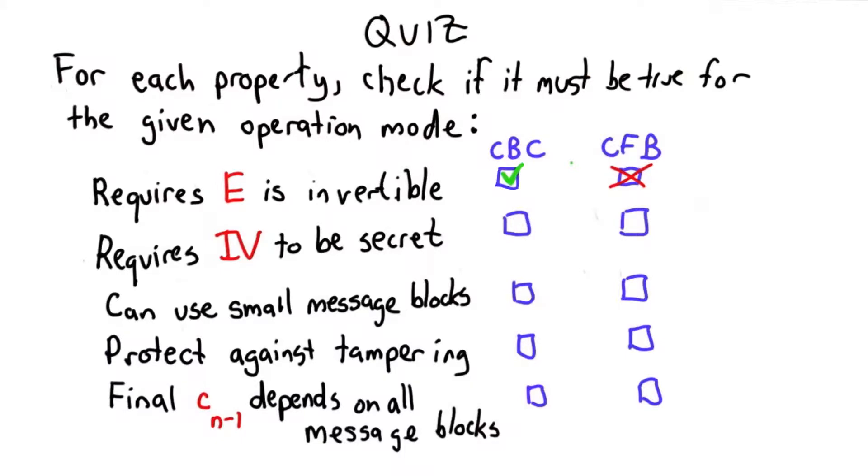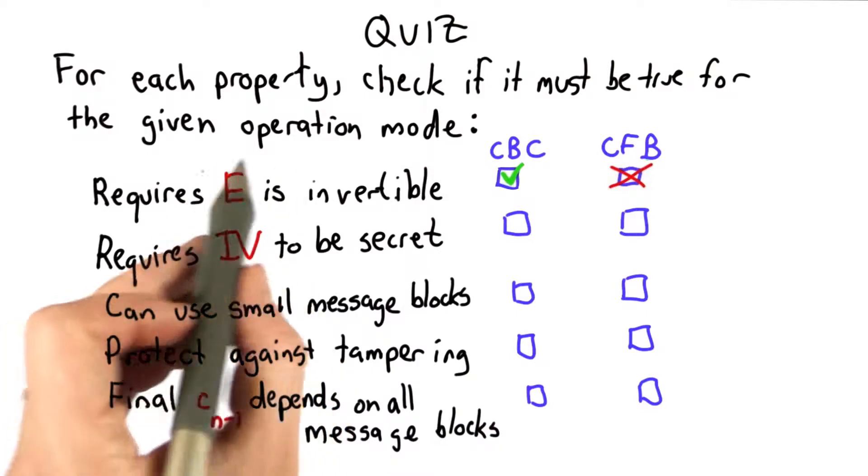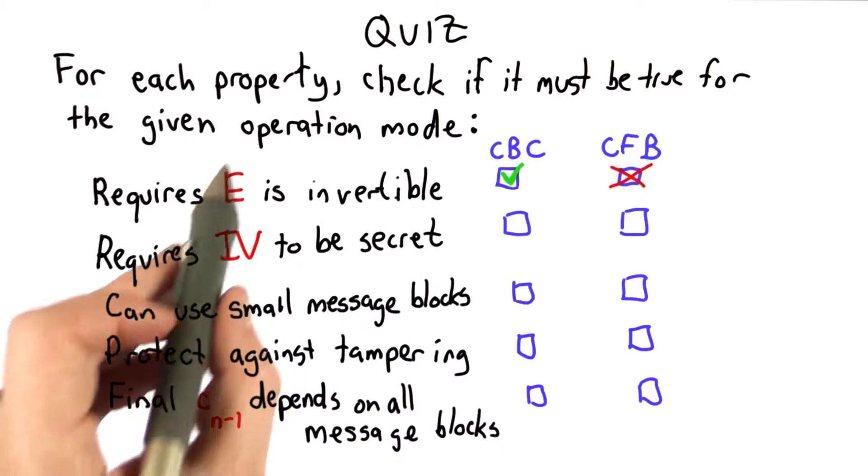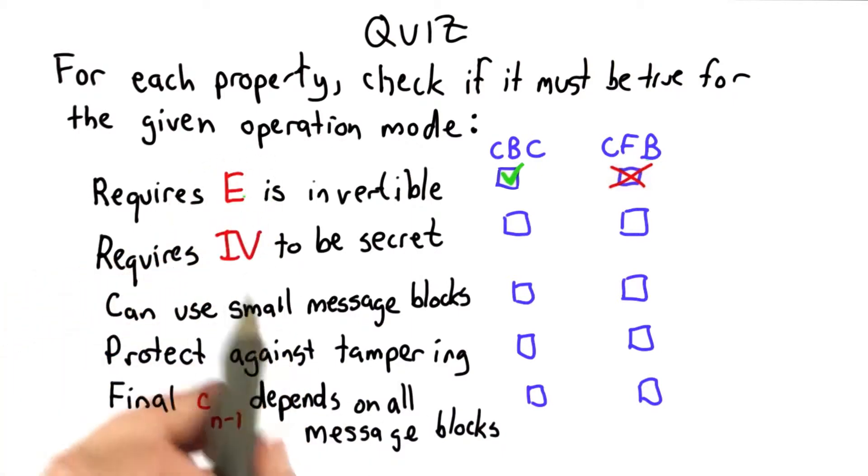CFB does not, as we saw both encryption and decryption use the encryption function in the forward direction. This has advantages that means there are more possible functions we could use for this. We haven't seen any yet, but soon we'll talk about hash functions which could be used as the encryption function for Cipher feedback mode.